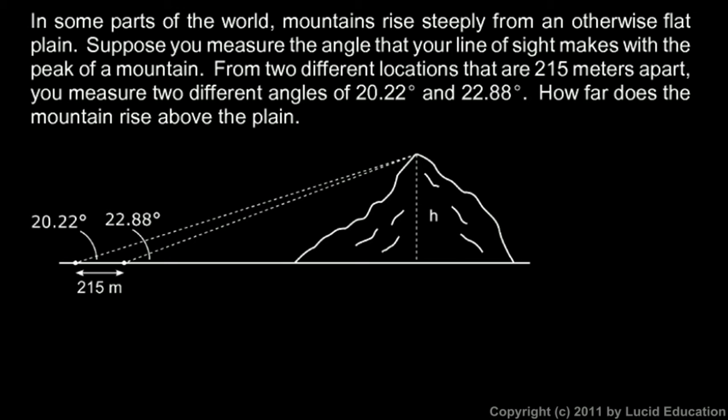We're told from two different locations—these two points that are 215 meters apart—two different angles are measured. From this point, the line of sight to the top of the mountain makes an angle of 22.88 degrees with the horizontal. If we scoot 215 meters over to the left to this point, our line of sight to the top of the mountain makes an angle of 20.22 degrees, and from that information we can find the height.